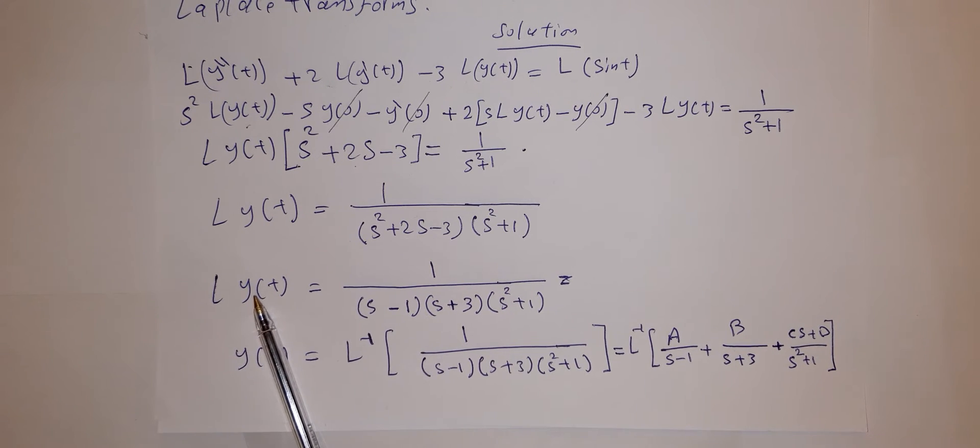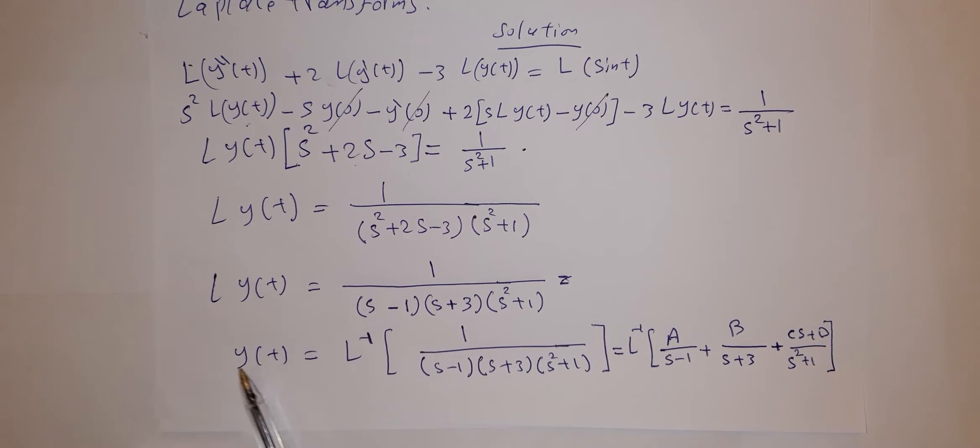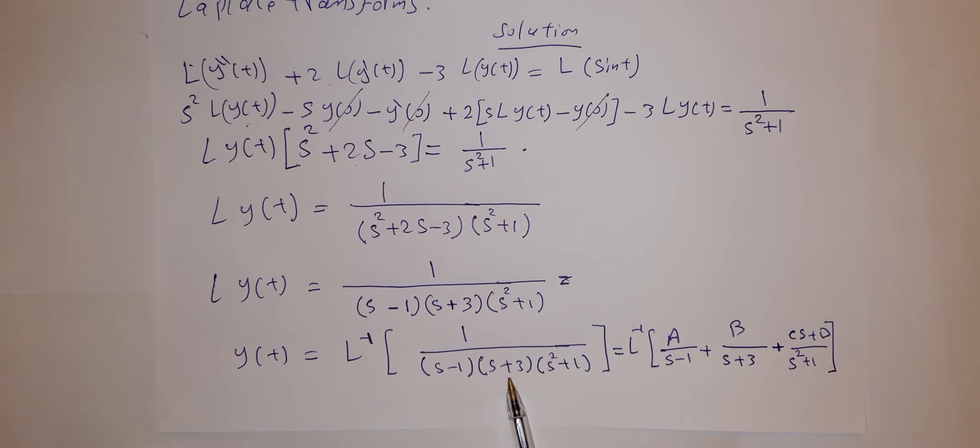To get y of t, you have to apply Laplace inverse. So you have y of t equals Laplace inverse of this guy here, and we have to use partial fractions: A over s minus 1 plus B over s plus 3, and because this is second degree, you have to write cs plus d over s squared plus 1.